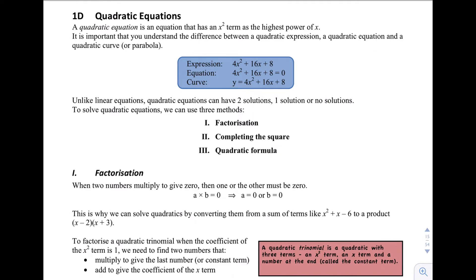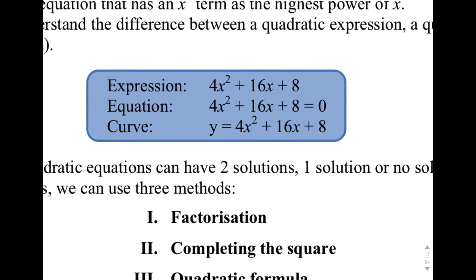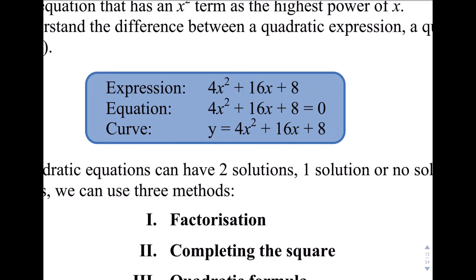First thing I think it's important to understand is the difference between expression, equation, and then the curve or the graph of this thing here. So an expression here doesn't have an equal sign in it, so we can simplify that thing, we can factorize that thing. That's all we can do with it. It's just sitting there. An equation has an equal sign in it. That's the difference right there. So now we can solve this. So we've got an equation we're going to be asking you to solve it. So find the values of x that make it true.